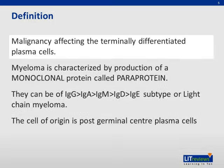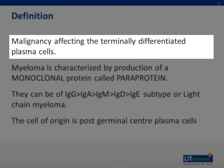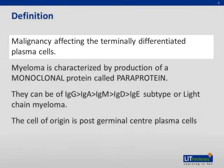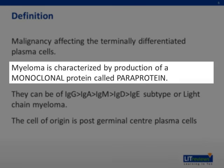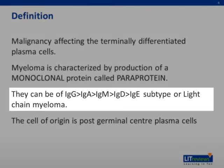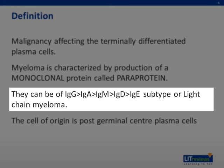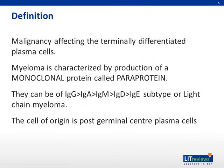Multiple myeloma is a malignancy affecting the terminally differentiated plasma cells. Myeloma is characterized by production of a monoclonal protein called paraprotein. They can be of IgG, IgA, IgM, IgD, or IgE subtype, or purely light chain myeloma. The incidence of IgG myeloma is the commonest, whereas IgE myeloma is a lot rarer.